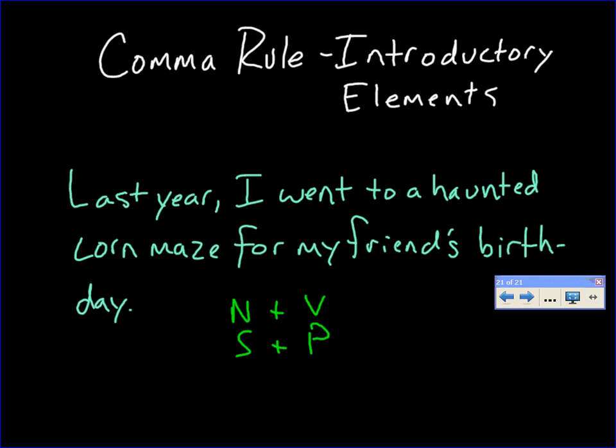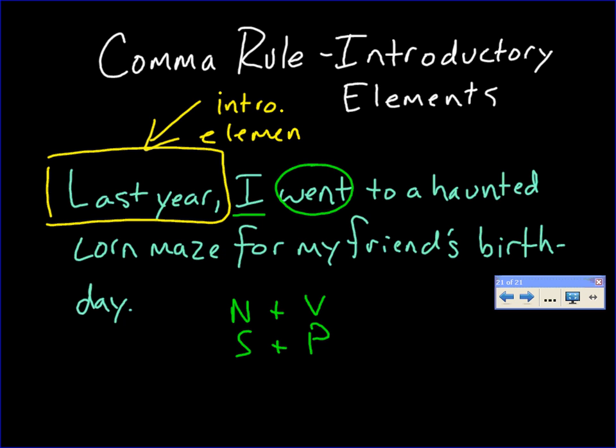Daniel, can you tell me the simple noun and verb or simple subject and predicate in this sentence? That's your noun. What's your verb? That's the sentence. I went. When additional kind of extra material comes in front of that, it's called an introductory element.